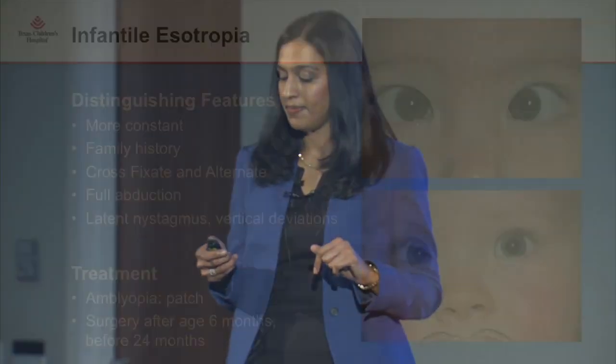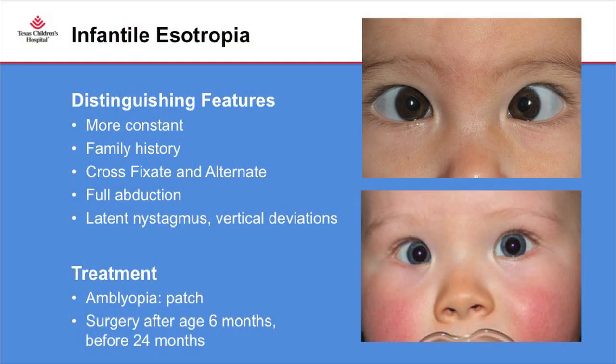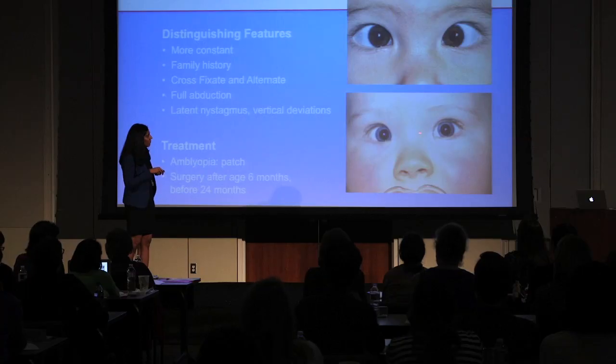For treatment, I tell parents their baby has a flat nasal bridge with a wide fold of skin, so there's not as much space between the colored part of the eye and the nose — the crossing is an illusion. As their nasal bridge and facial features grow, the skin should come up and it should start to look less like they're crossing. I recommend follow-up if the crossing gets worse or if it's not getting better in a couple of months. The most important concern when discussing pseudo-strabismus is infantile esotropia.